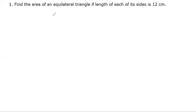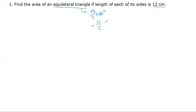Let's look at the first question. The first question is the area of an equilateral triangle with a side length of 12 cm. There is a formula for an equilateral triangle — it is root 3 by 4 times side squared. This is derived with the help of Heron's formula. So the side squared means 12 into 12. The answer is 36 root 3 cm squared.